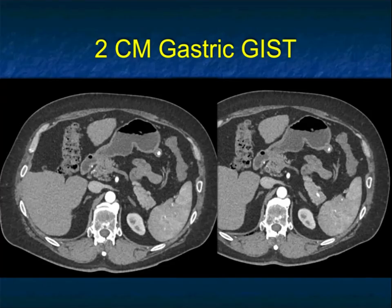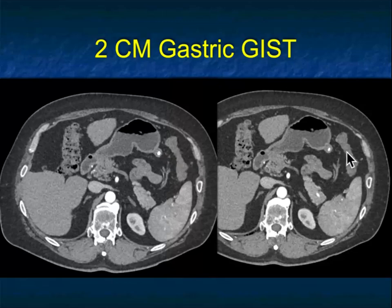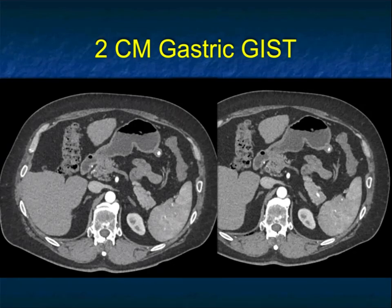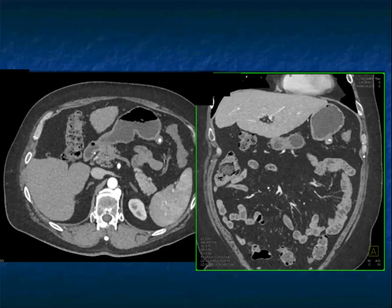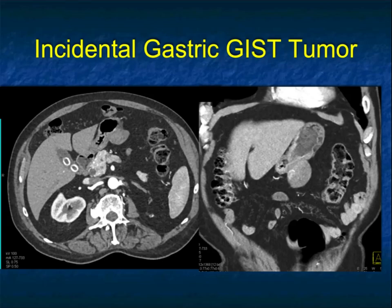Another example: a small tumor that appears to be exophytic, with a calcification — you could think about a possible leiomyoma. It looks benign and is small, so you could potentially follow it. These smaller GIST tumors are typically incidental findings.